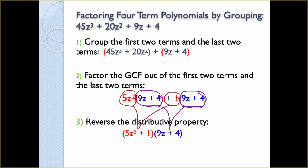The key with factoring by grouping: group the first two terms and the last two terms, find the GCF for each, and when you pull those out, make sure you have a matching set. In this case, 9z + 4 matches 9z + 4, so we pull that out as a factor group. The 5z² plus 1 is the other factor. We're going to do a few of these so you can see how this works.